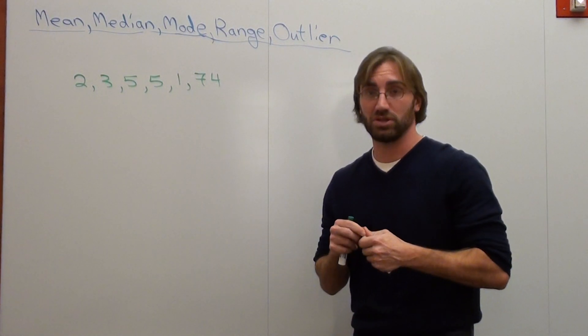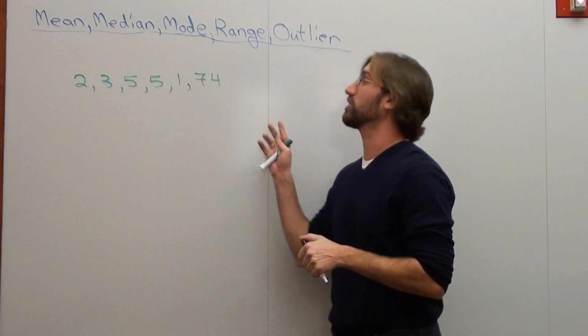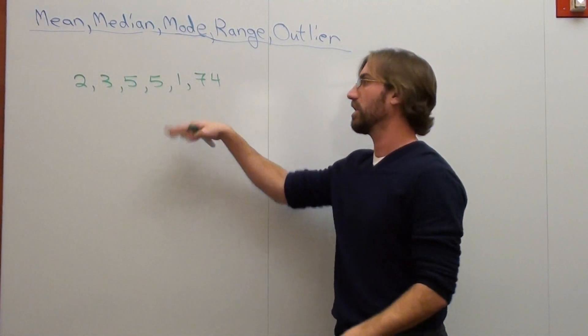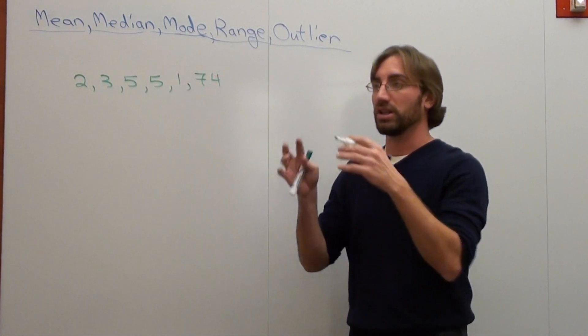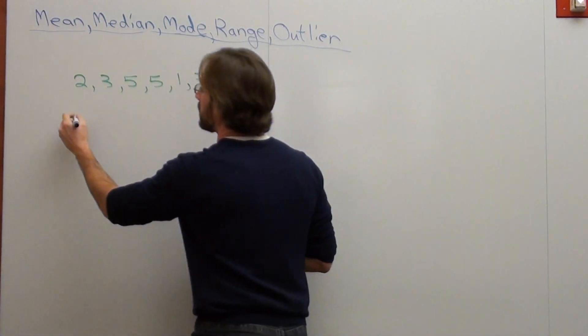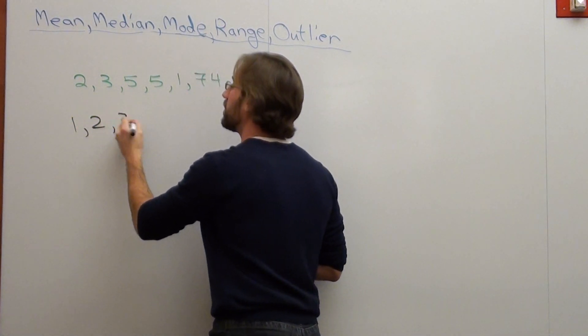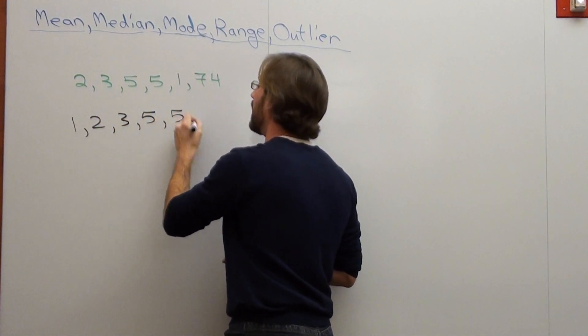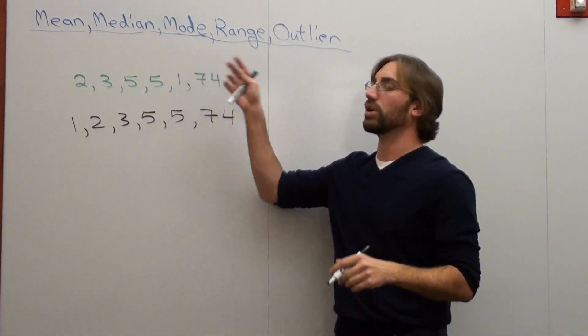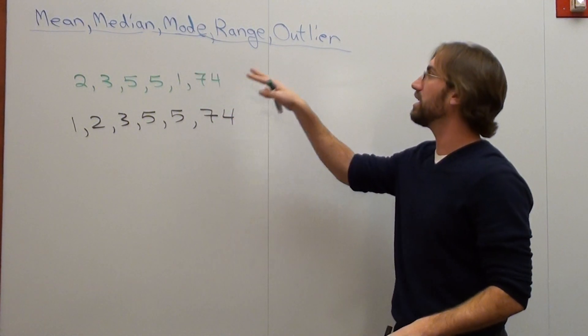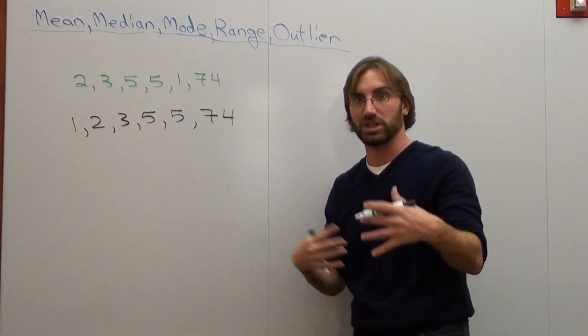Now, when I tell my students to do it, when they're figuring out mean, median, mode, range, and outlier, and I don't put these lessons directly with each other. This is just a precursor lesson. I tell them to arrange the numbers from least to greatest. So they do. They're like, okay, 1, 2, 3, 5, 5, and 74. And I tell them what we're going to do is we're going to compute mean, median, mode, range, and outlier. Well, that's exactly what we're going to do.